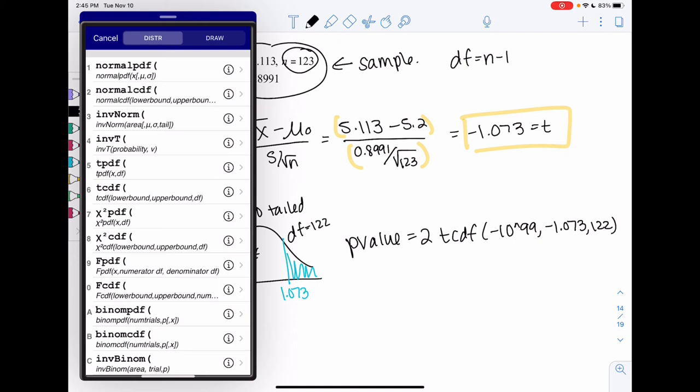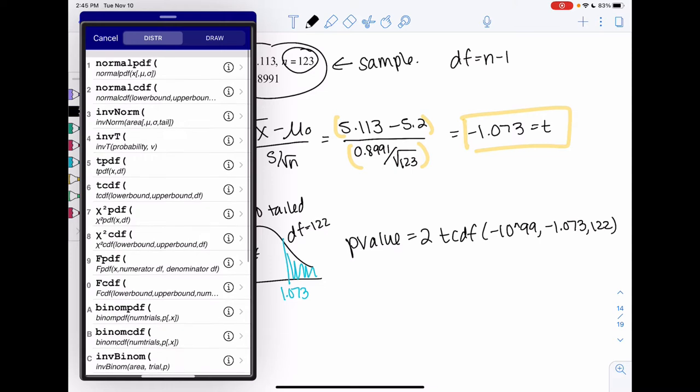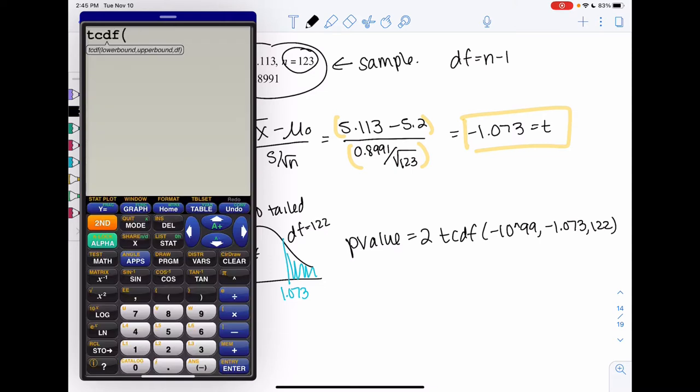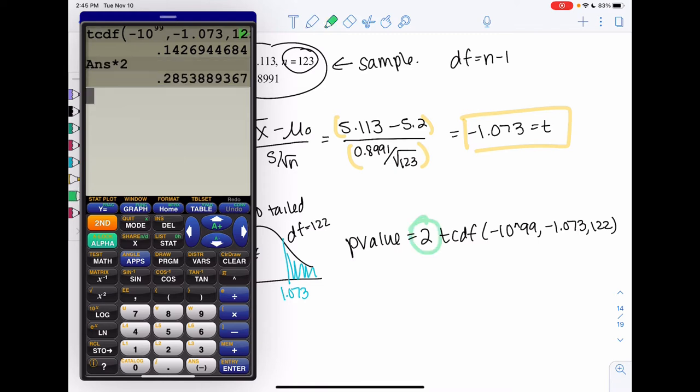You go to that distribution menu, and then normal CDF you'll see, and if you just go a little bit lower, you'll see t-CDF. We'll do lower, upper. It should command degrees of freedom, 122. And we get 0.1427, and then we just need to go ahead and double it for two-tailed.